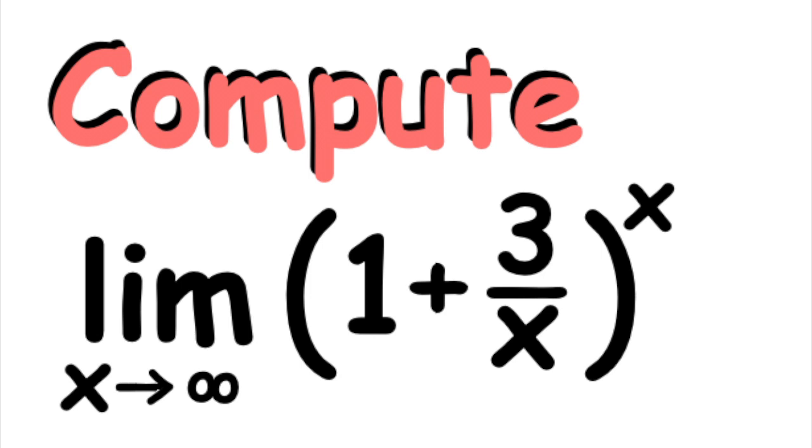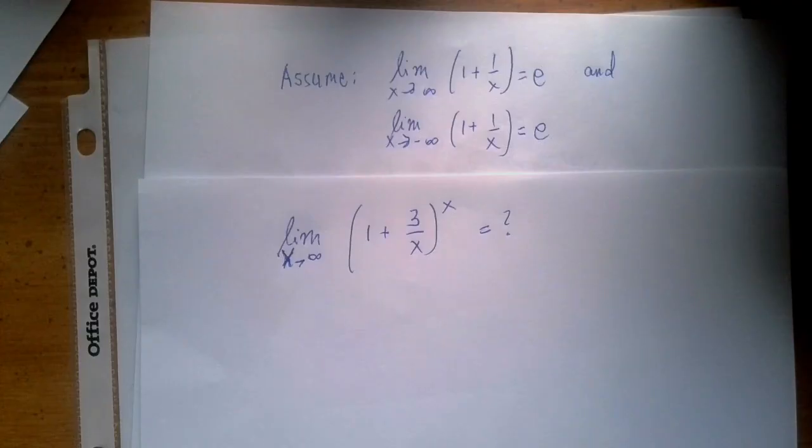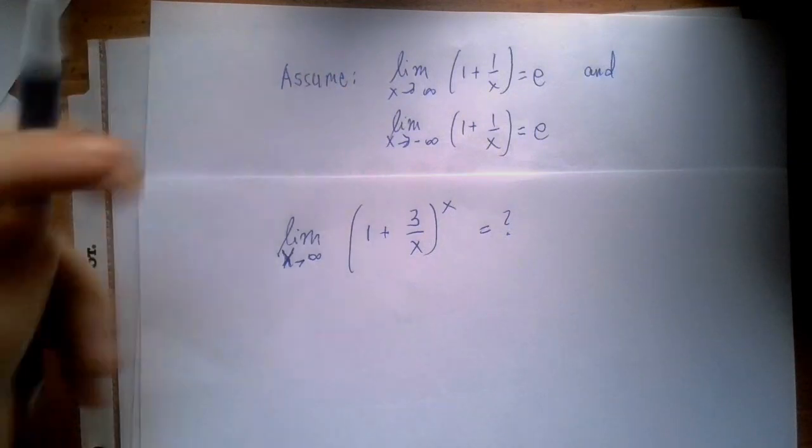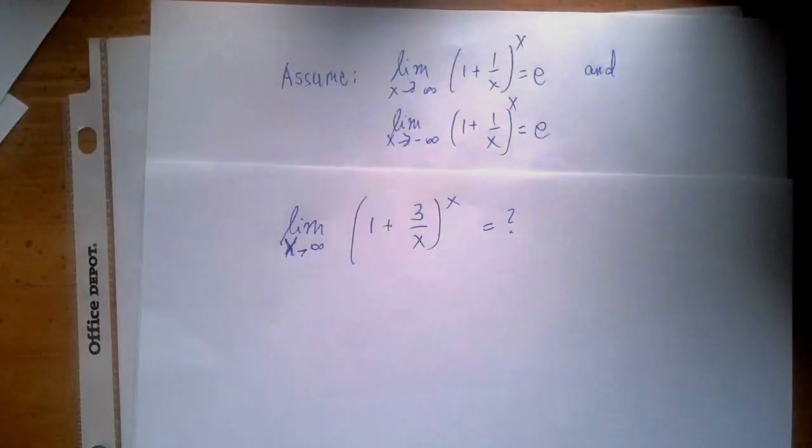From now on, with limits related to e, we will assume these two facts to be true: that the limit of 1 plus 1 over x to the power of x is e as x approaches both infinity and negative infinity.